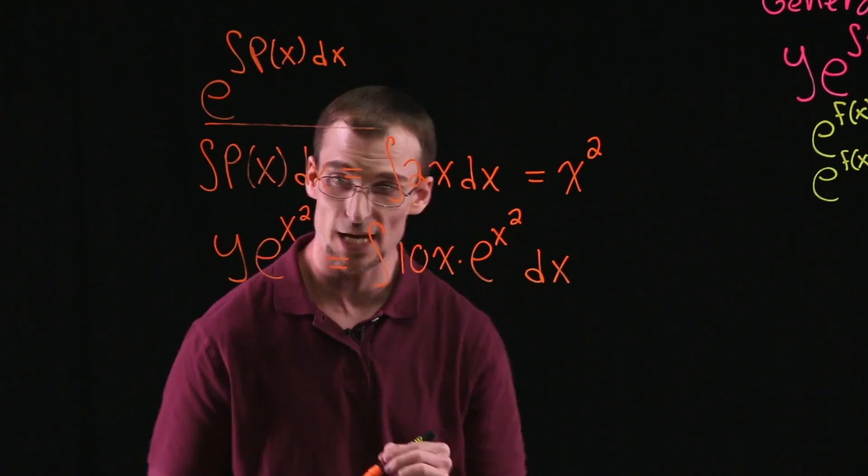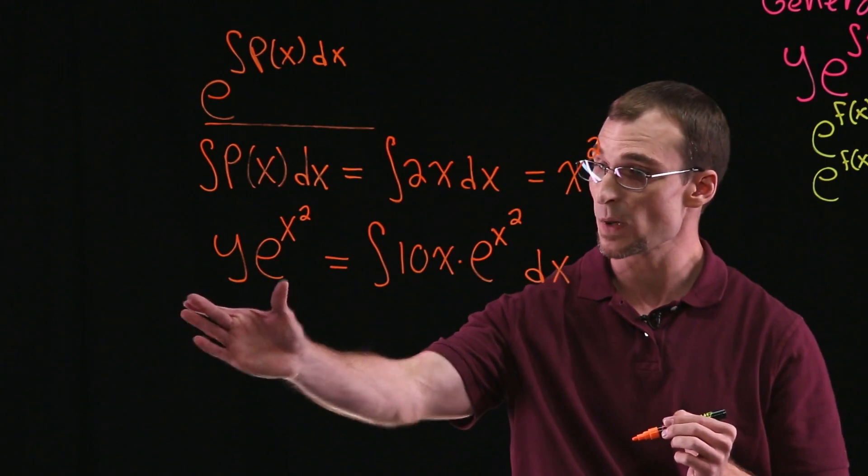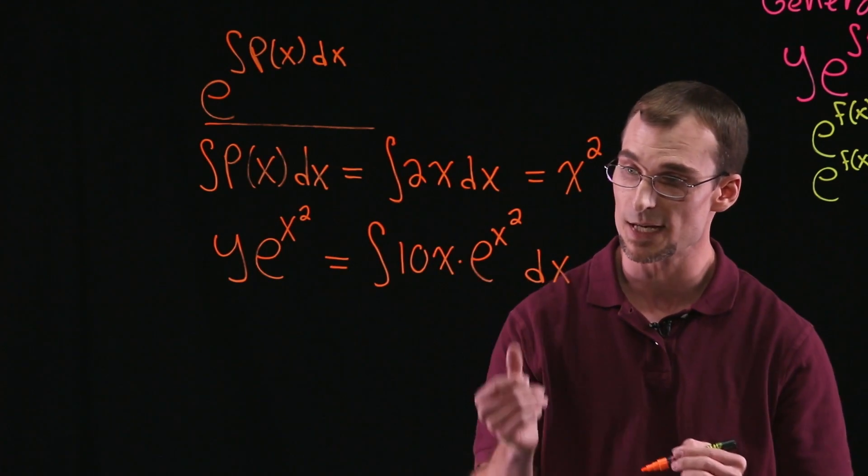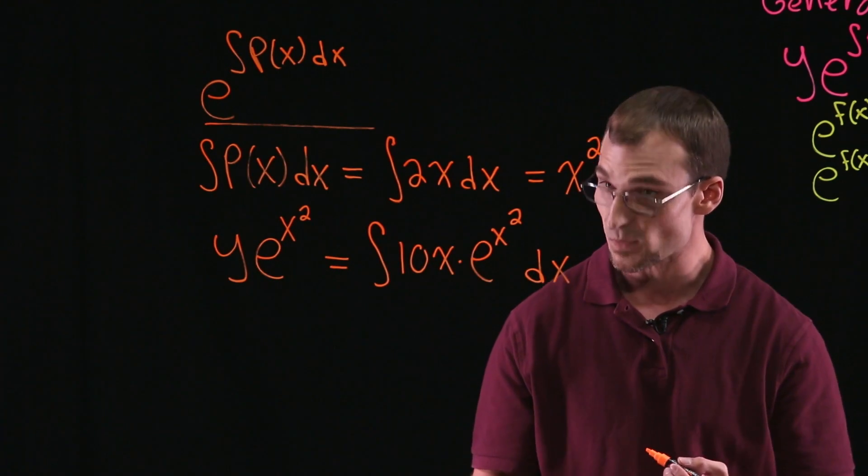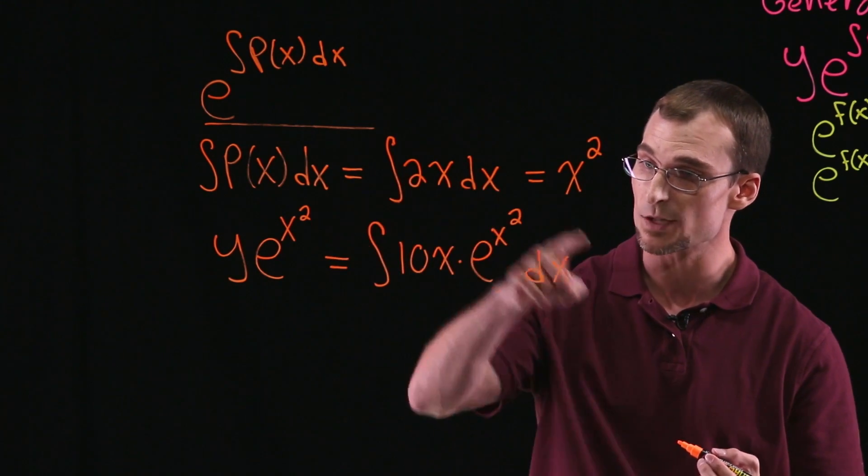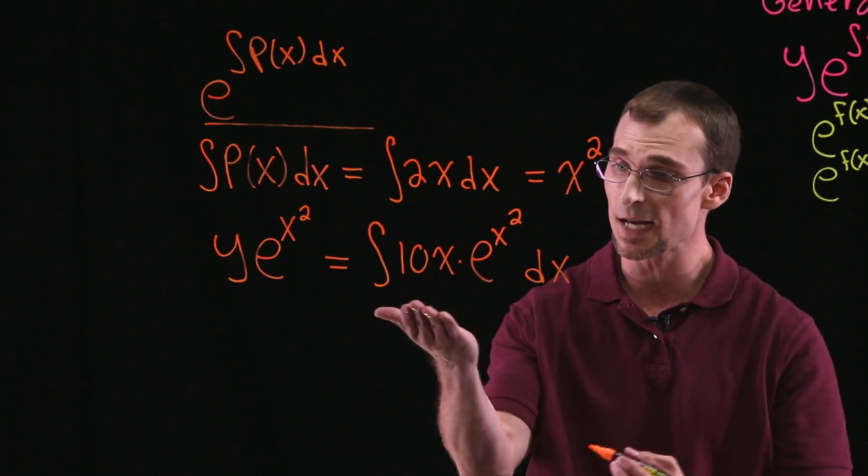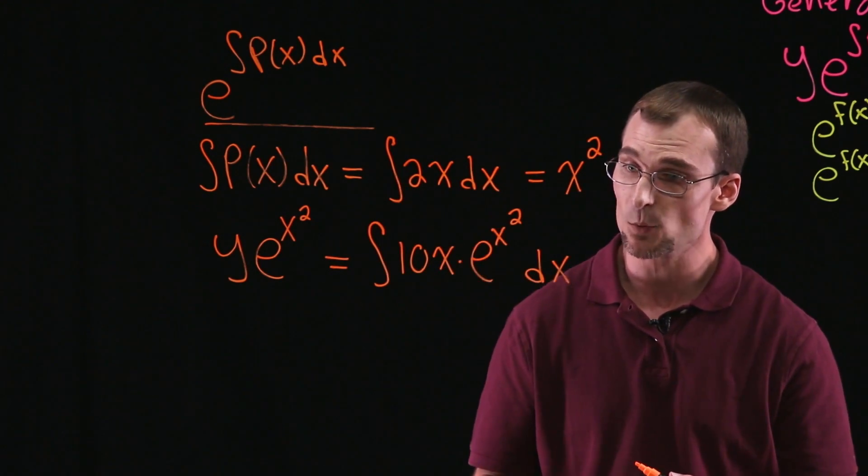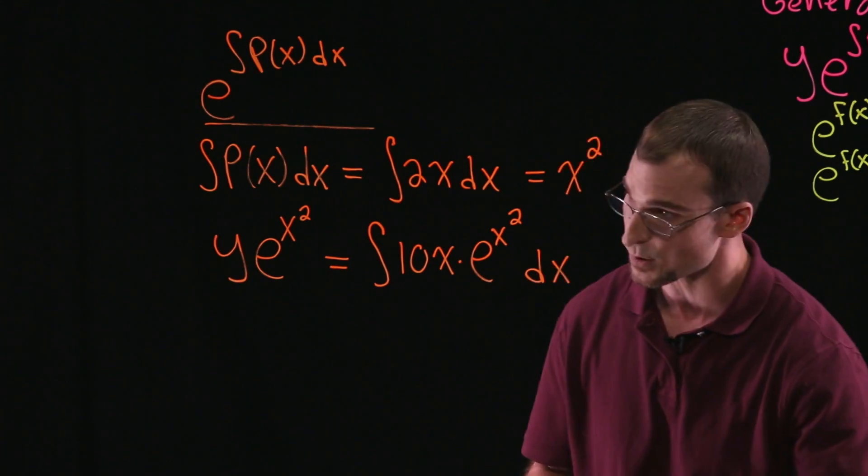And we'll add on our constant once we're done taking the integral. OK. So what do we have? y times e to the x squared is equal to the integral of 10x times e to the x squared dx. So to continue solving this, we're going to take this antiderivative. And if we look at this 10x times e to the x squared, we see we can use a u substitution.